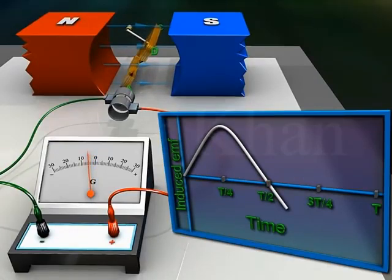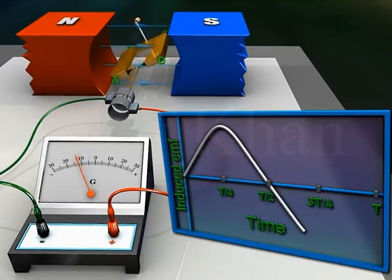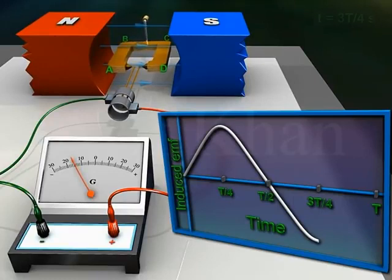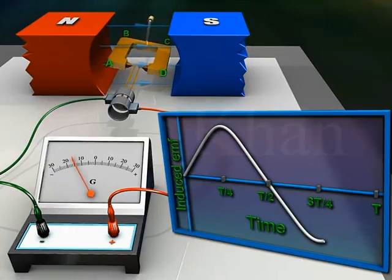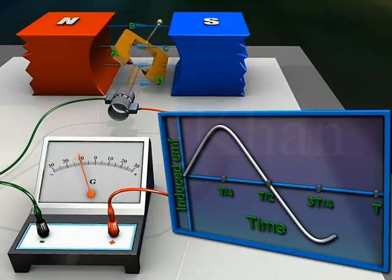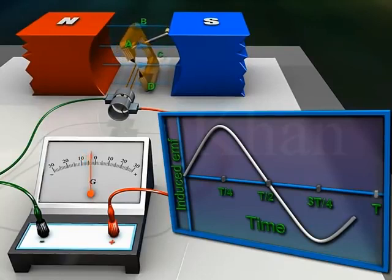During the third quarter rotation, the induced EMF increases but has an opposite polarity as compared to that of the first half rotation. At time 3t/4 seconds, the induced EMF attains its maximum negative value. During the fourth quarter rotation, the induced EMF decreases and becomes 0 momentarily at time t seconds.